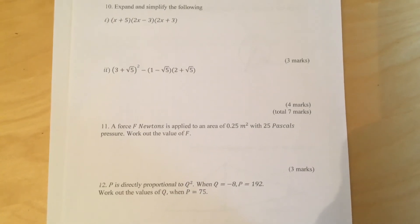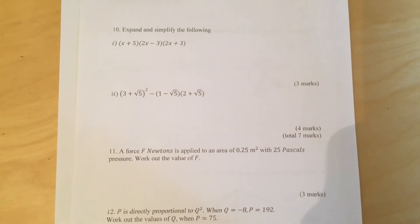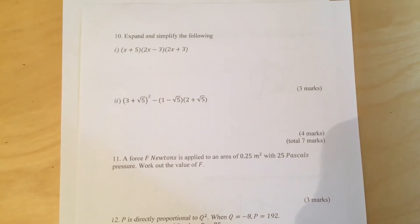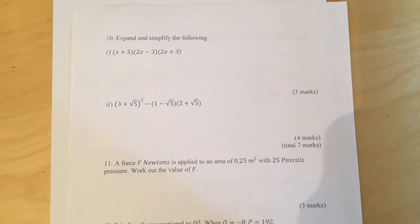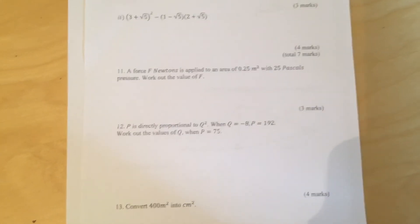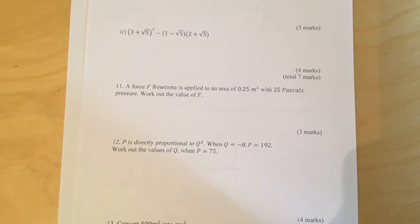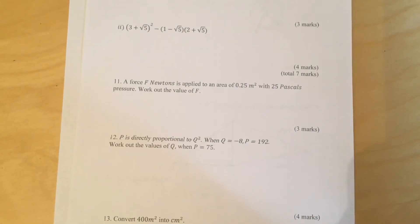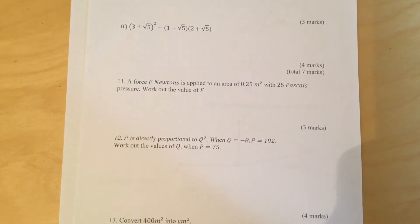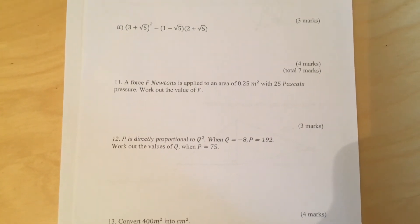Question 11. A force F newtons is applied to an area of 0.25 meters squared with 25 pascals pressure. Work out the value of F. Question 12. P is directly proportional to Q squared. When Q is minus 8, P is 192. Work out the values of Q when P is equal to 75.